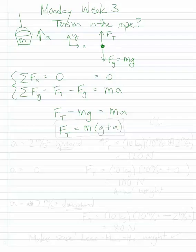So let's try some values. In the value that was given, it was accelerating at 2 meters per second squared upward. And in that case then, the force of tension is equal to the mass which is 10 kilograms times g which is 10 meters per second squared plus 2 meters per second squared.